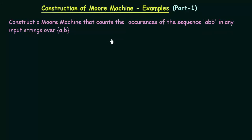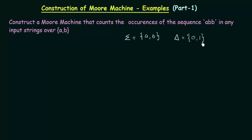We know that a Moore Machine should also give outputs. So how can we design the Moore Machine in such a way that from the output it gives, we can count the number of times the sequence ABB occurs? We have our inputs as A, B and the output as 0s and 1s. We can design it such that whenever we encounter the sequence ABB, we print a 1. At the end, we count how many times 1 appears in the output, and that tells us how many times ABB occurred.